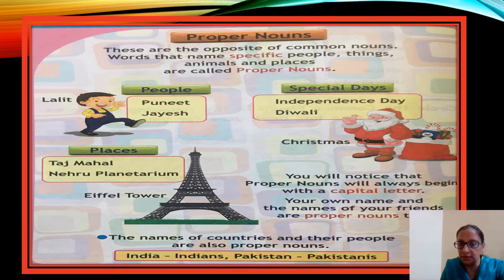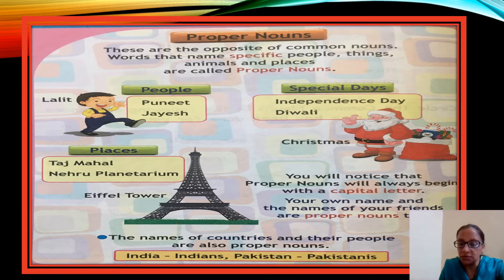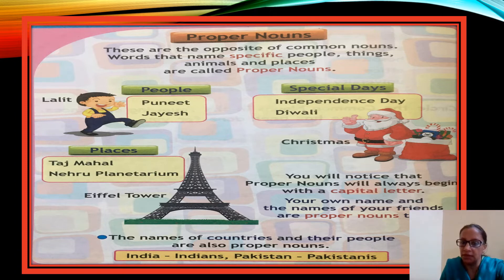For example: Lalit, Puneet, Jaiish — these are names belonging to specific individuals. Just like everyone in the class has their own name, and even if two children share a name their roll numbers are different, making them specific. Special days like Diwali and Independence Day are also proper nouns because there is only one of each.